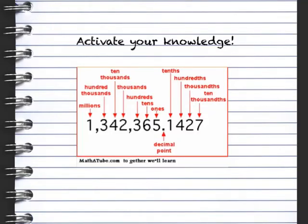To activate your knowledge for this lesson, I'd like you to review this place value chart. Remember that when we see that decimal point, to the right of the decimal point, we have the tenths place, the hundredths, thousandths, and ten thousandths. Feel free to refer back to this place value chart throughout the lesson if you need a reference.